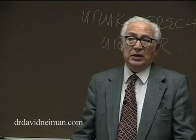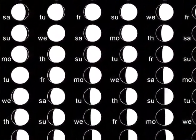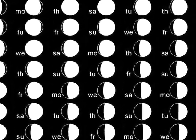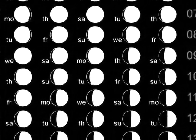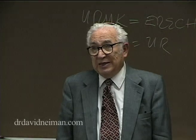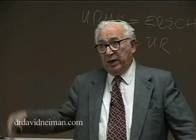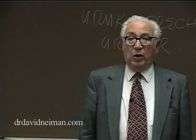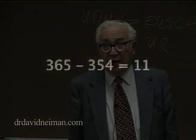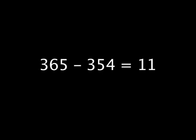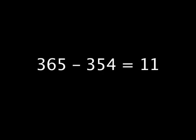Now, that cycle is 29 and a half days. The moon cycle is 29 and a half days. But that's not practical. So what you do is you alternate 29-day month, 30-day month, 29-day month, 30-day month. And you go around 12 months like that, alternating 29 and 30-day months, and you wind up with 354 days. It's 11 days too short — too short for the solar cycle.